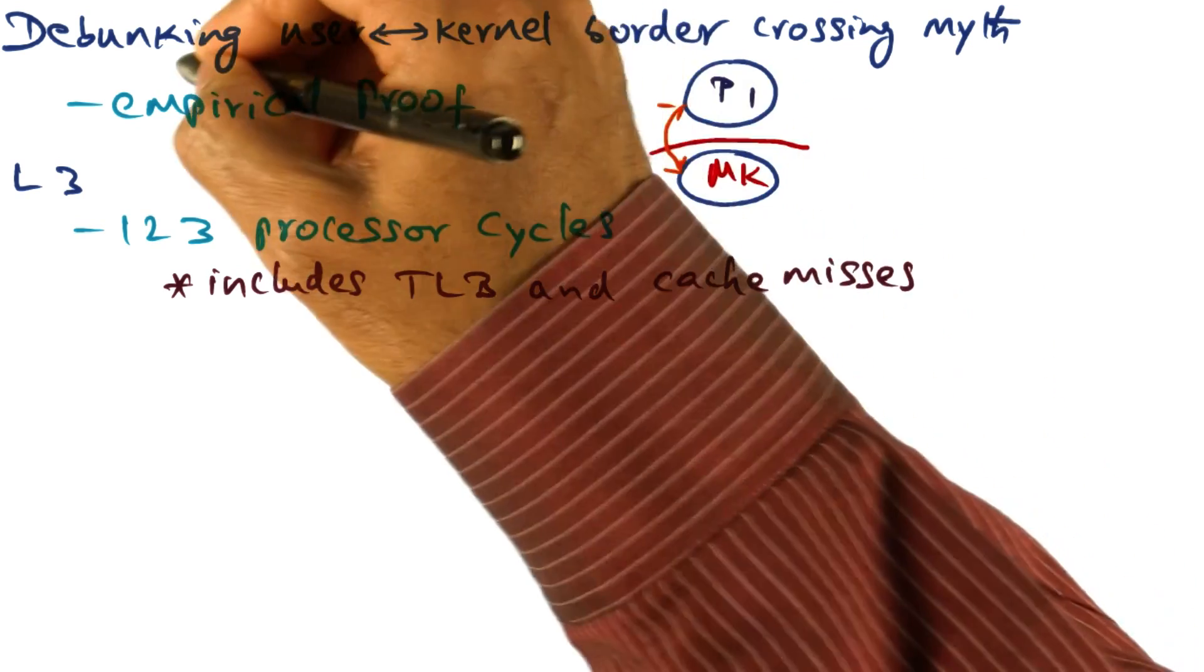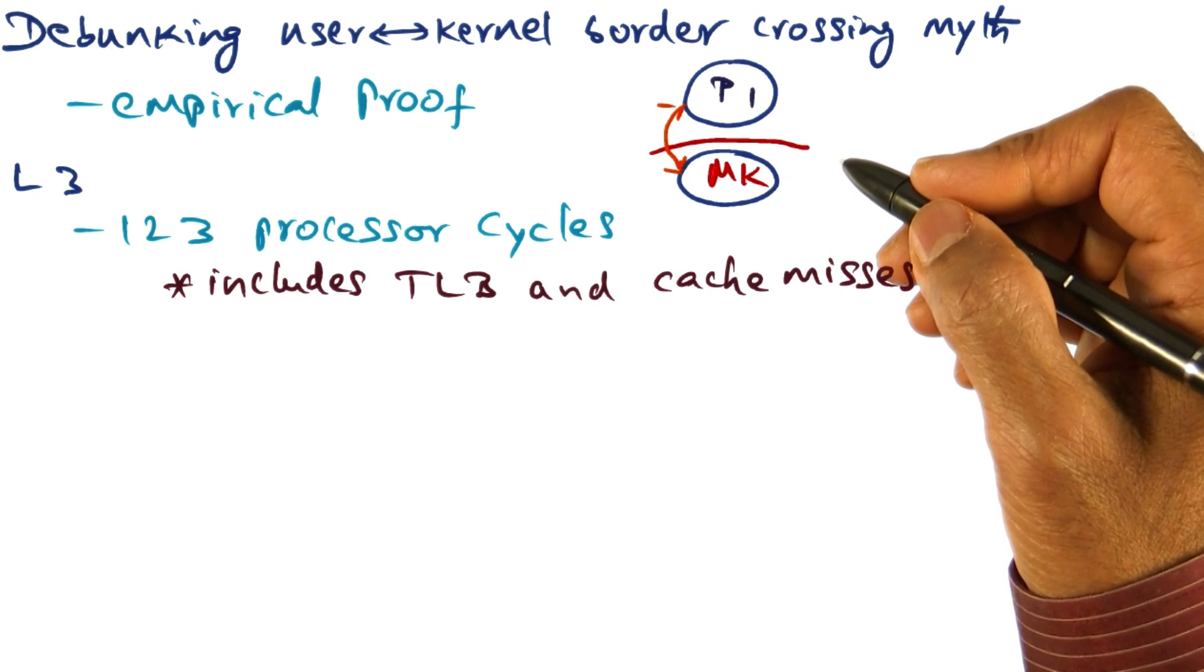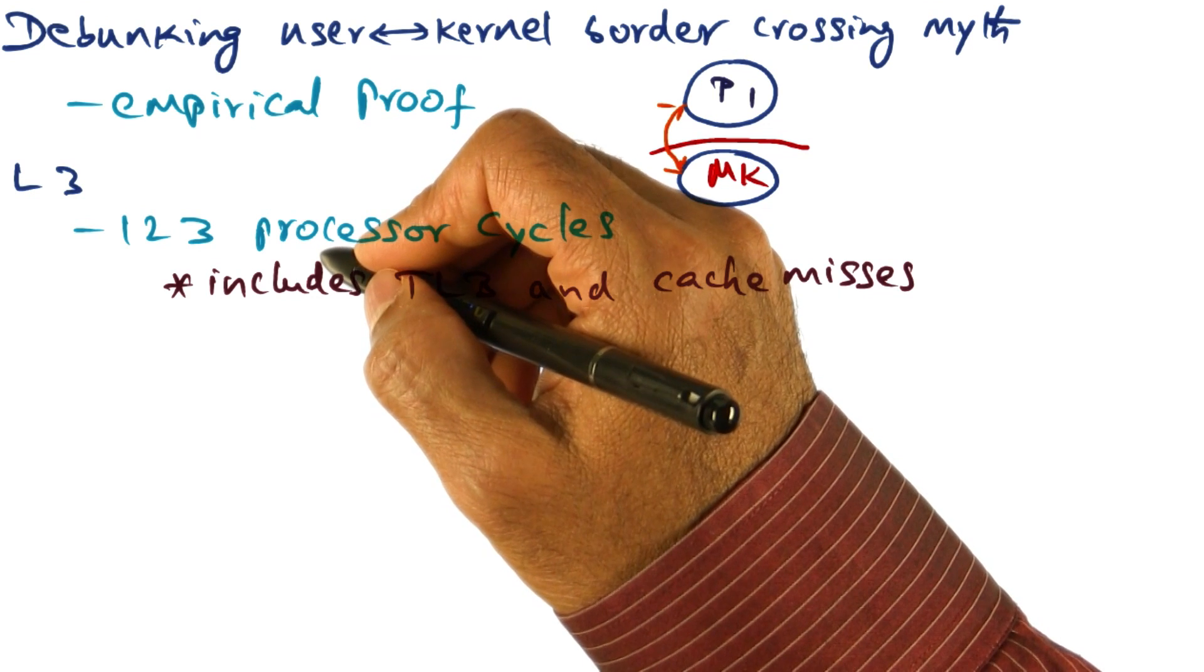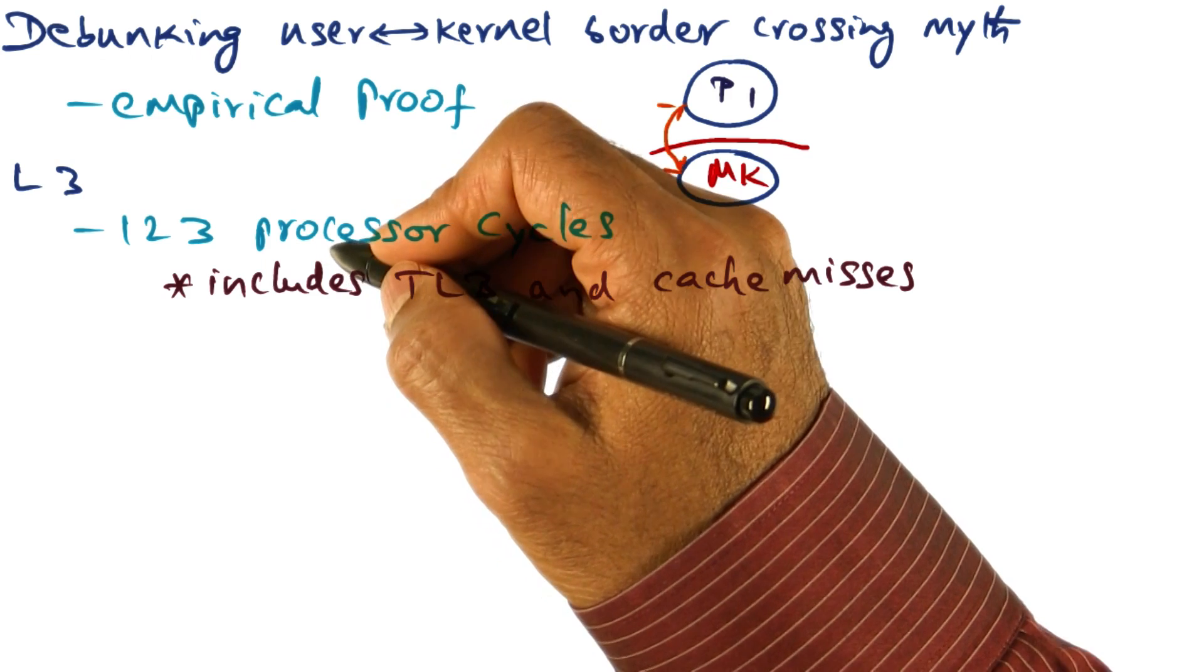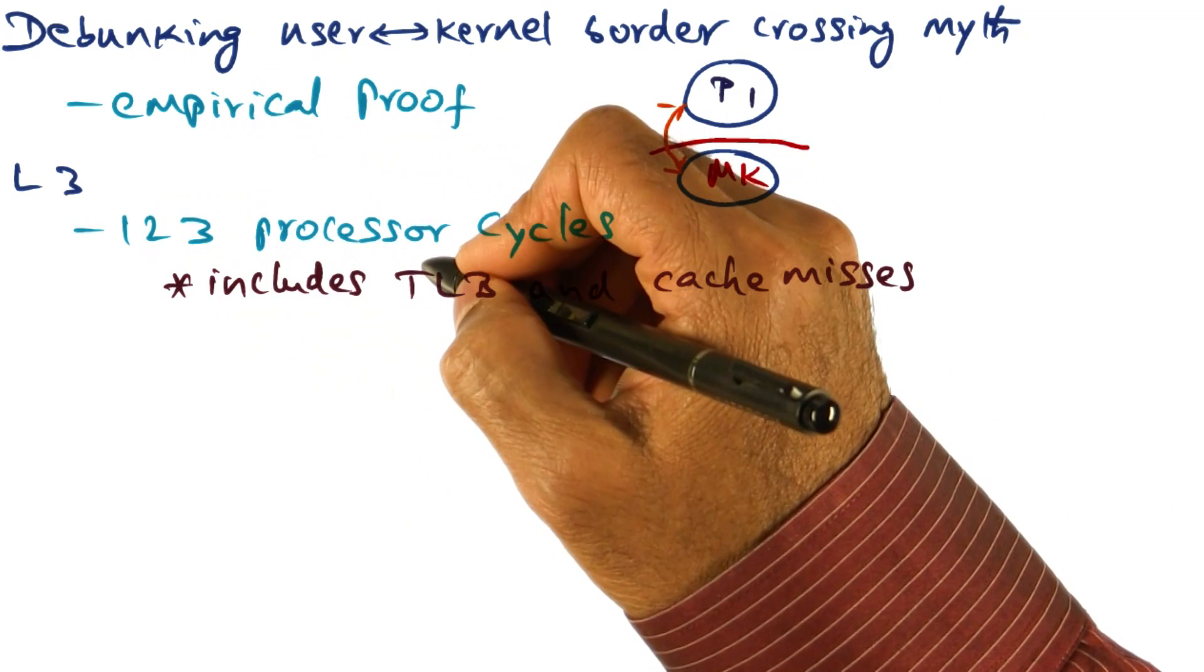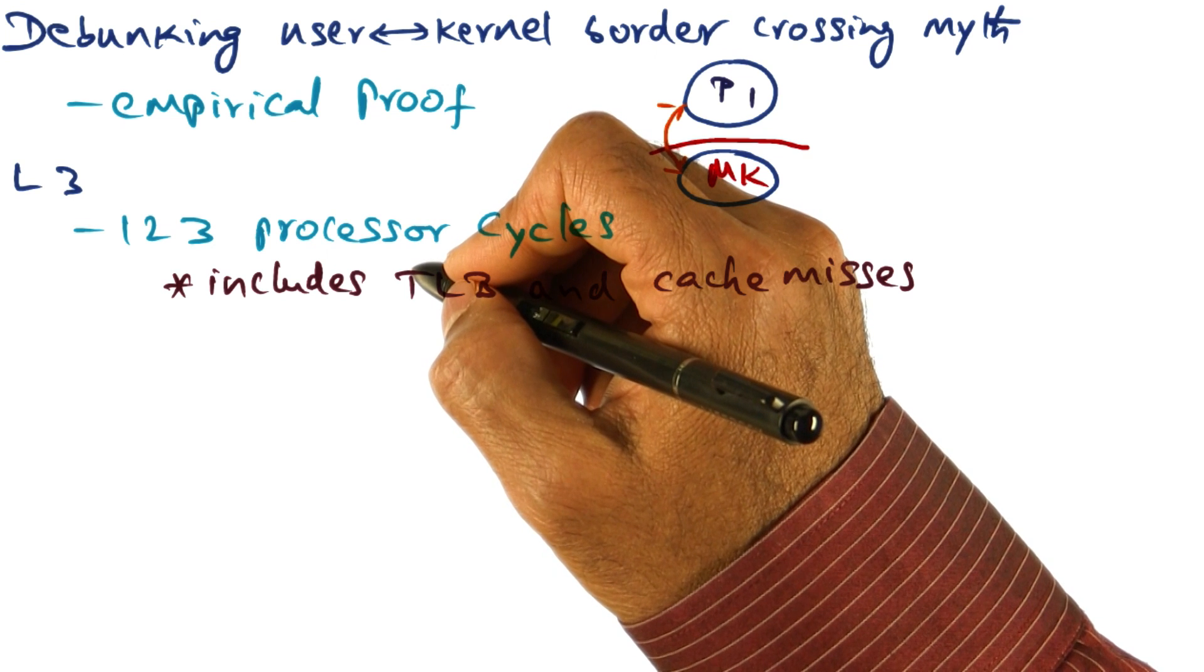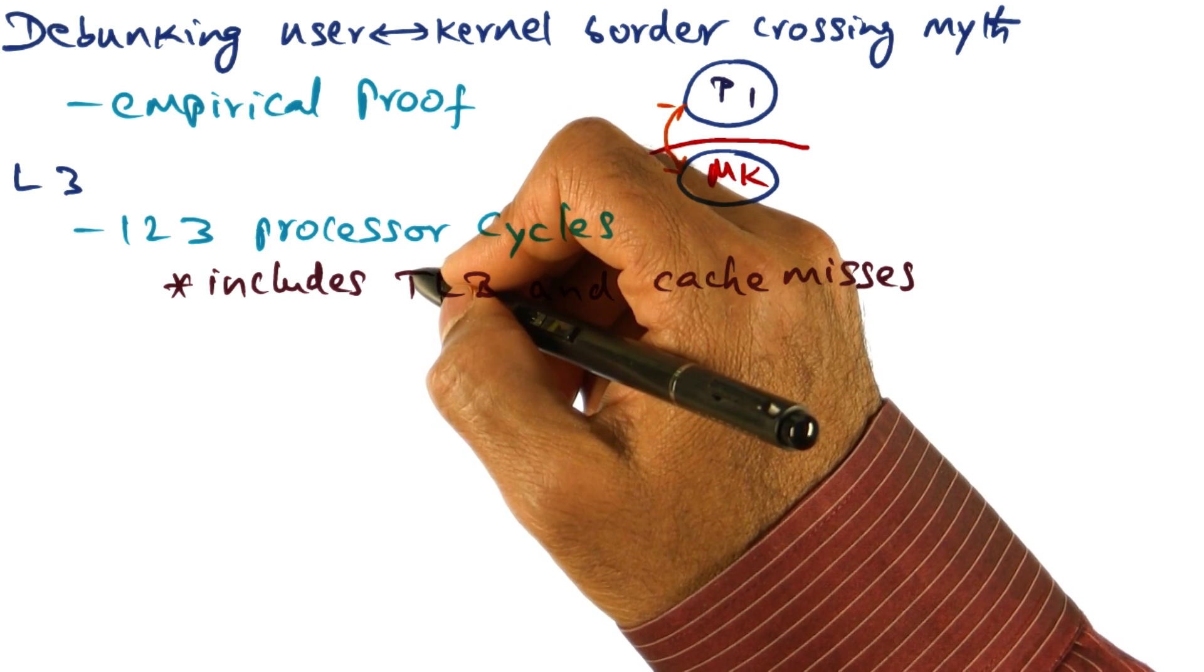Or in other words, this is debunking the myth that border crossing is going to be expensive in microkernel based design. It's as close to what it would take minimally in the processor, even if you hand code through machine instructions what needs to happen to go from the user space to the kernel space. So that is proof that microkernel based design is not going to be incurring any more overhead for border crossing.